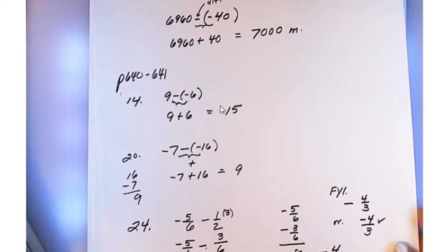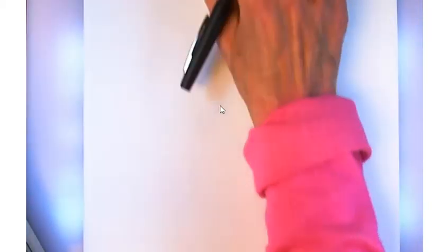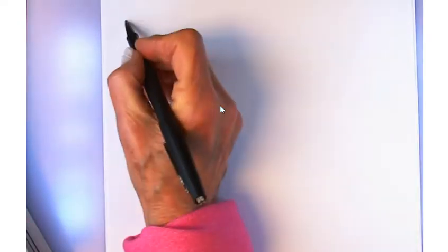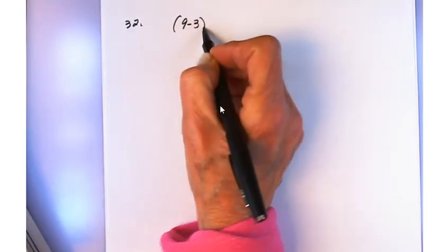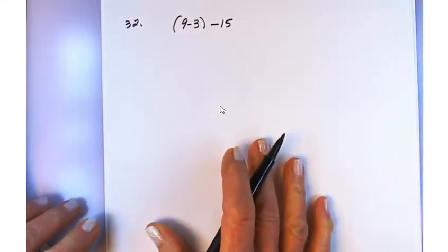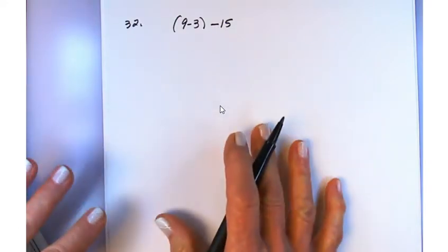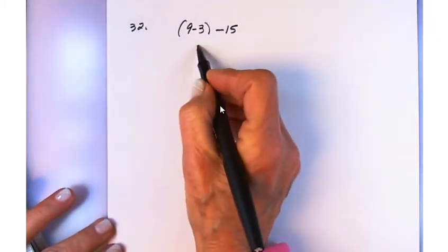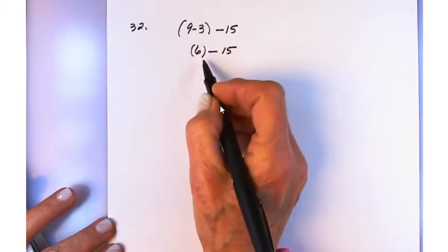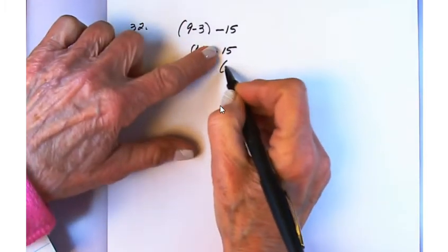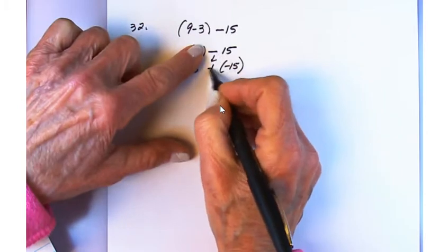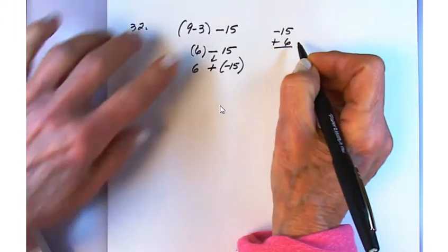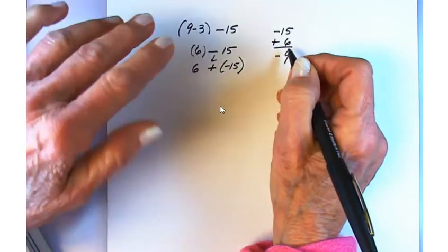Number 32: 9 minus (3 minus 15). Don't use a calculator — you have to know how to do this. Go inside: 3 minus 15. Change sign of subtrahend to negative, change minus to plus: 3 plus negative 15. The absolute difference is 12, use the sign of the greater absolute value — result is negative 12. Then 9 minus negative 12: double negative gives positive — answer is not needed further here.